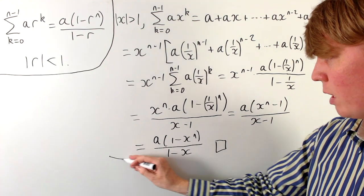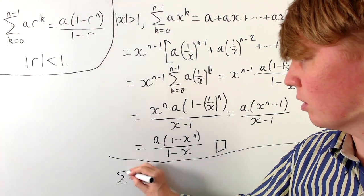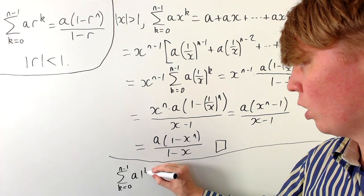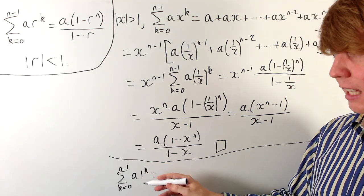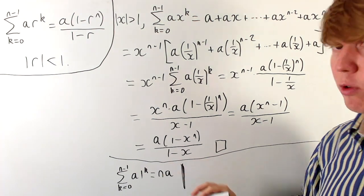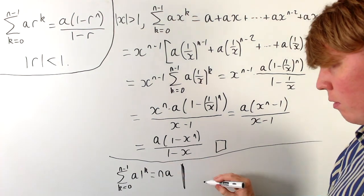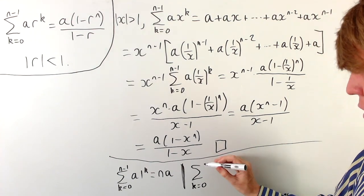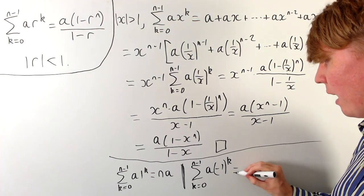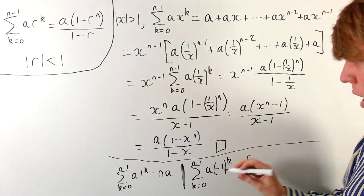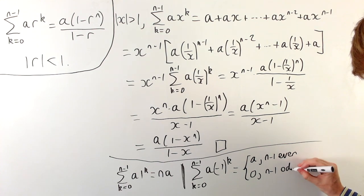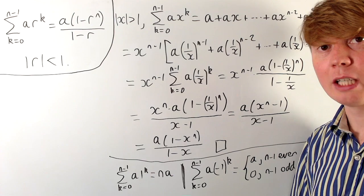The only remaining case is where the modulus of the common ratio equals 1. If the common ratio equals positive 1, then a times 1 to the k is just a summed n times, giving n times a. If the common ratio equals negative 1, we oscillate between adding and subtracting a. The sum from k equals 0 to n minus 1 of a times (negative 1) to the k gives a when n minus 1 is even, and 0 when n minus 1 is odd — in the odd case all terms cancel out in pairs.